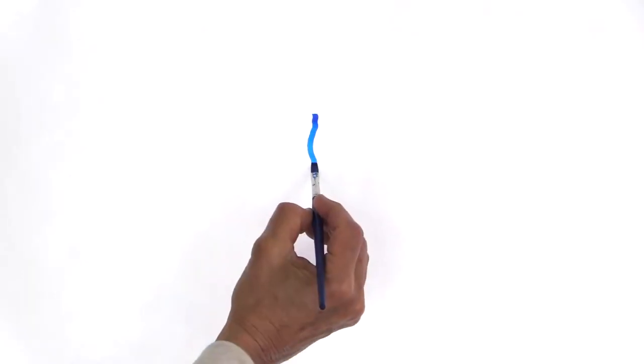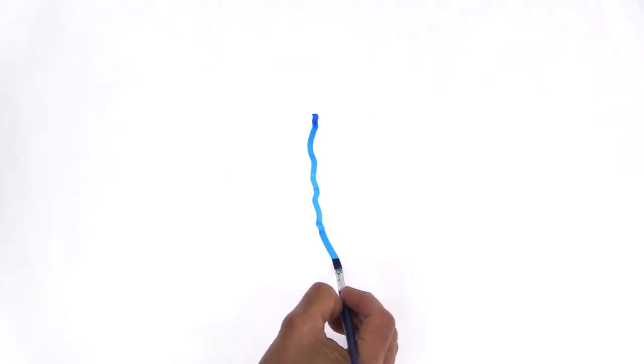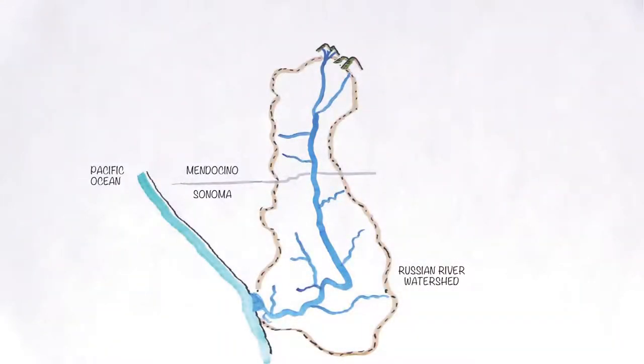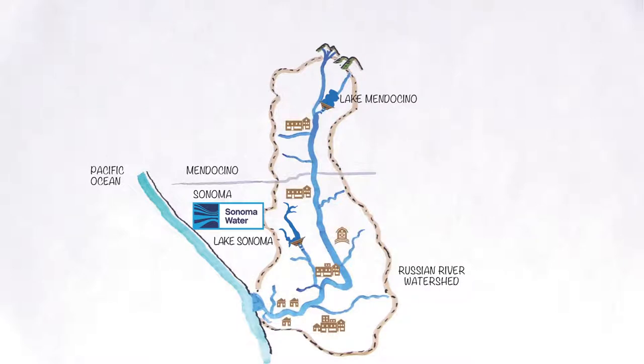The Russian River flows through Mendocino and Sonoma counties. Sonoma Water is one of the agencies working to care for the river. Sonoma Water provides water supply, flood protection, and wastewater treatment for the benefit of people and the environment.